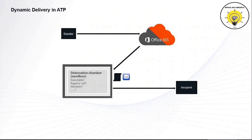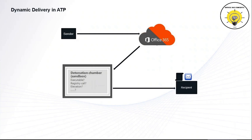When an attachment enters the Safe Attachment sandbox environment, a detonation chamber analyzes the attachment and determines whether it is safe or not. This process takes up to 30 minutes depending on the file size. With dynamic delivery of Safe Attachments, that delay is eliminated by sending the body of the email to the recipient while the actual attachment undergoes the Safe Attachments scan. While the attachment is being scanned, users can read and reply to the email. If the attachment is found safe, it is attached with the email in the user's mailbox; if unsafe, the attachment is rejected.